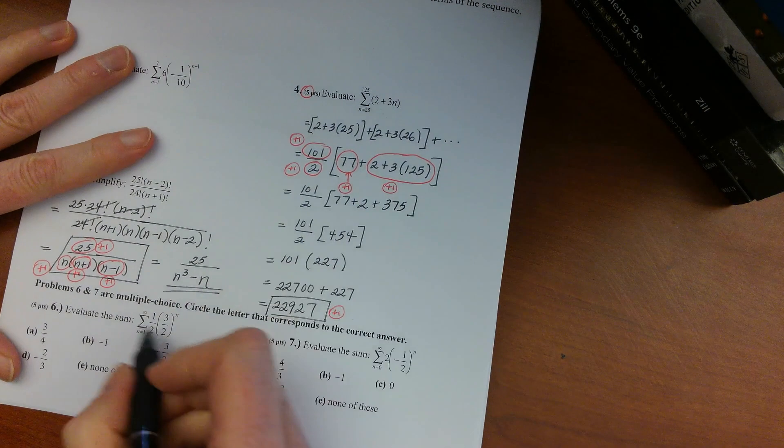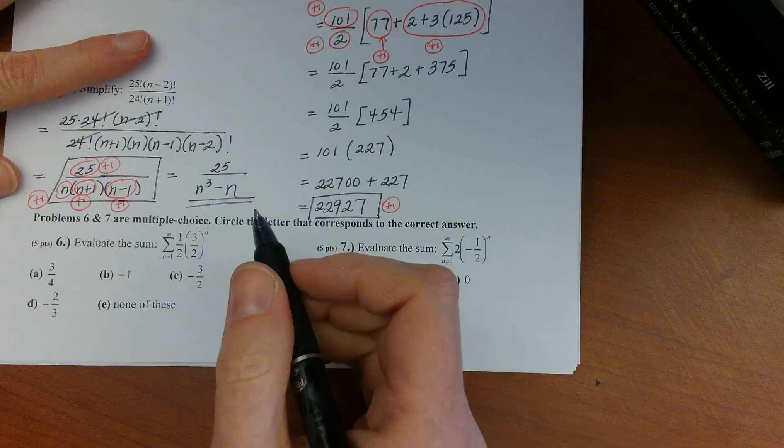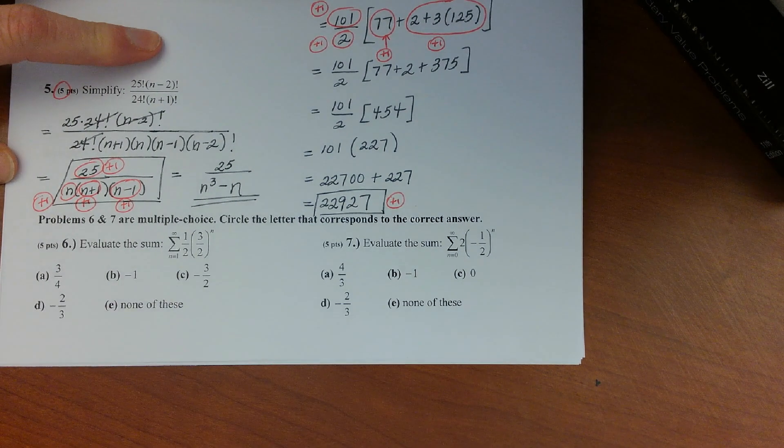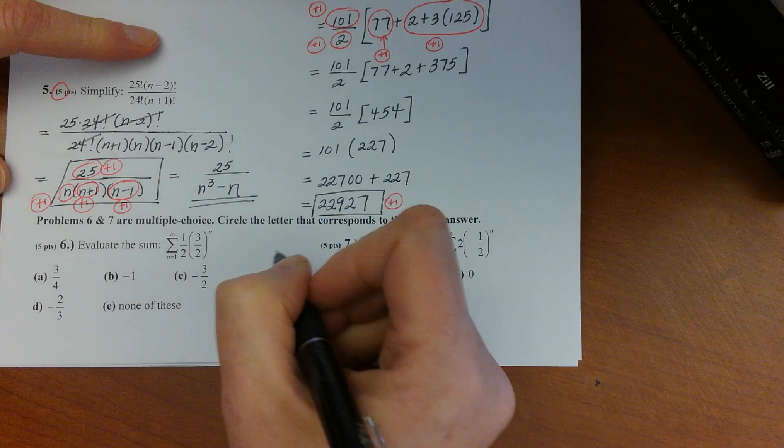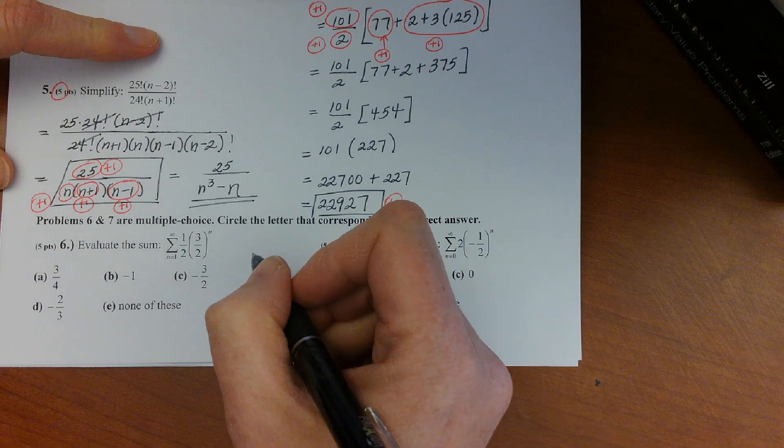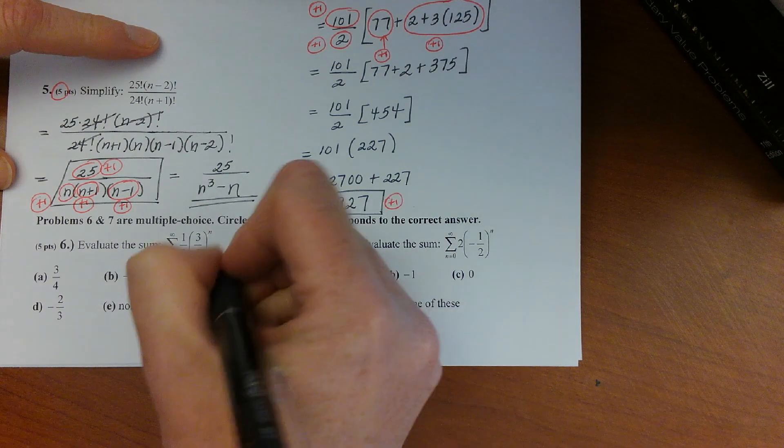Okay, let's see, problem six, evaluating the sum. So this is a geometric with a common ratio of one and a half. And so if you were to start expanding the terms, you'd see that the terms themselves approach infinity.